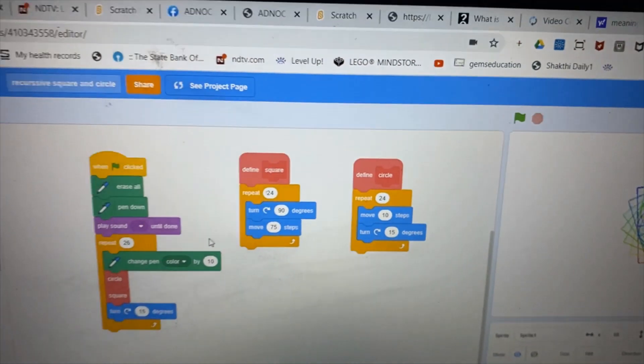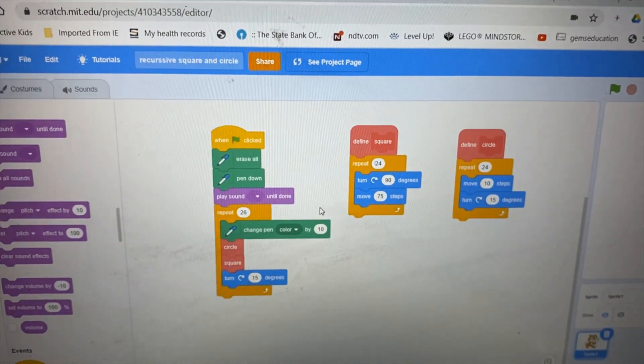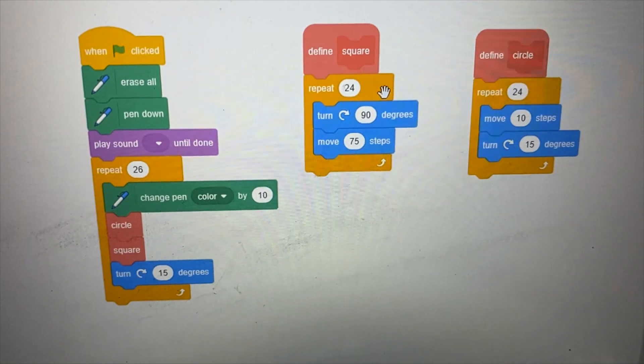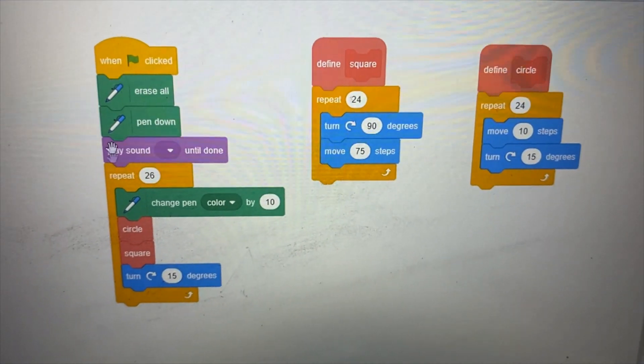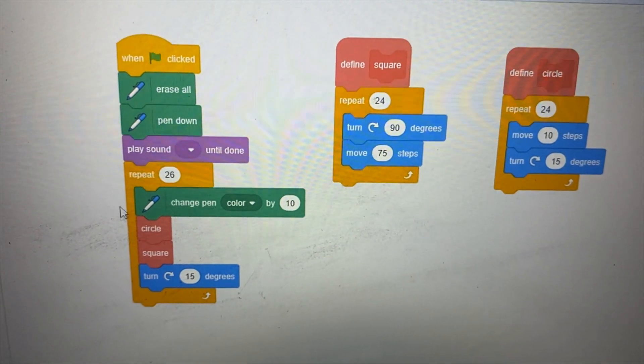This has three parts. In the first one, I have programmed a square. In the second one, I have programmed the circle. And the third is to repeat 26 times.